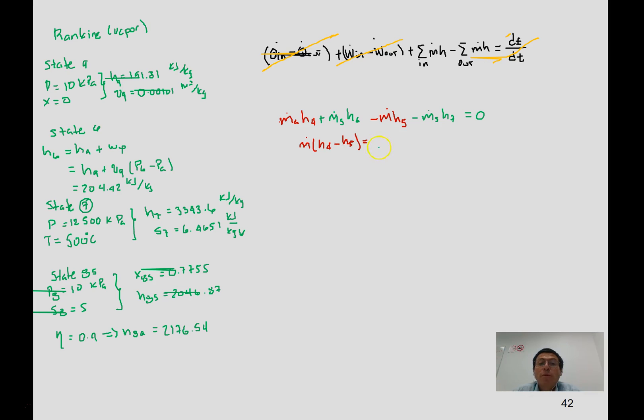We're going to have the heat transfer equation. Solving, we get 7.398 kilograms of steam per second.